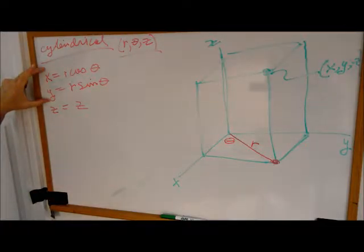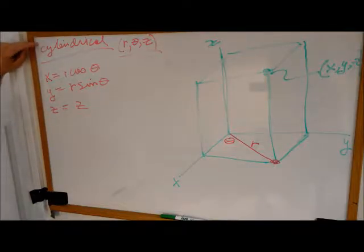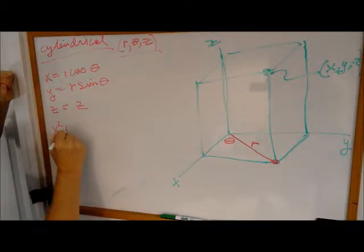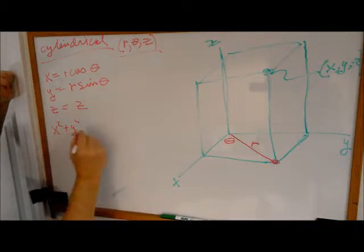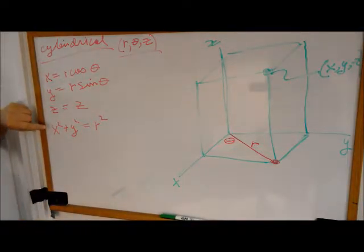It's just polar coordinates, and Z equals Z, and that's what we mean by cylindrical. Also note that X squared plus Y squared equals R squared, just like in regular old polar coordinates.